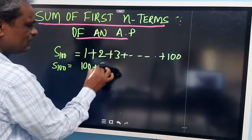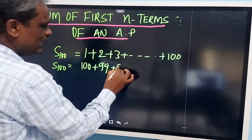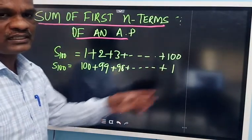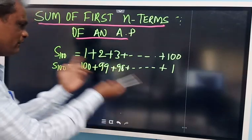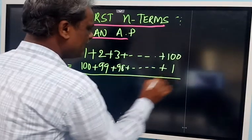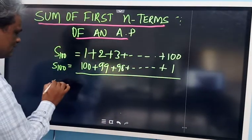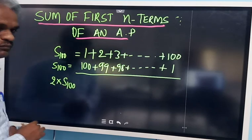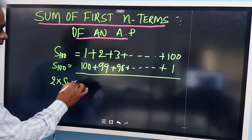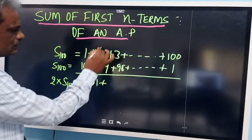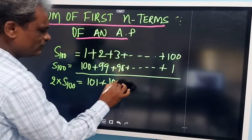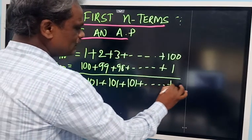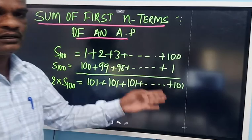What he did was reverse the same sequence: 100, 99, 98... like this, with the first term at the last. So we want to add 1 to 100 — he reversed these numbers and added them together. What happens? The sum of 1 to 100, two times, appears. For example, 1 plus 100 equals 101, 99 plus 2 again equals 101, 98 plus 3 again equals 101 — you always get 101.